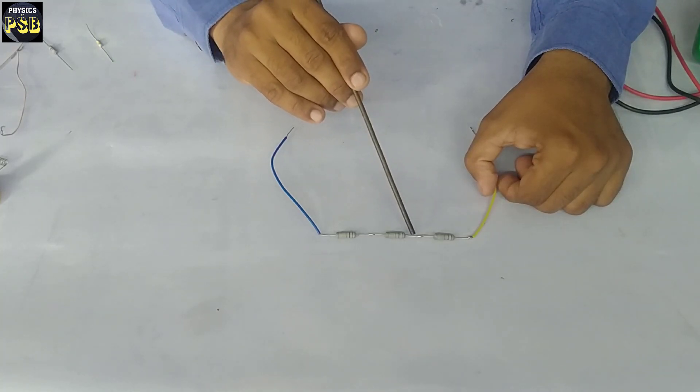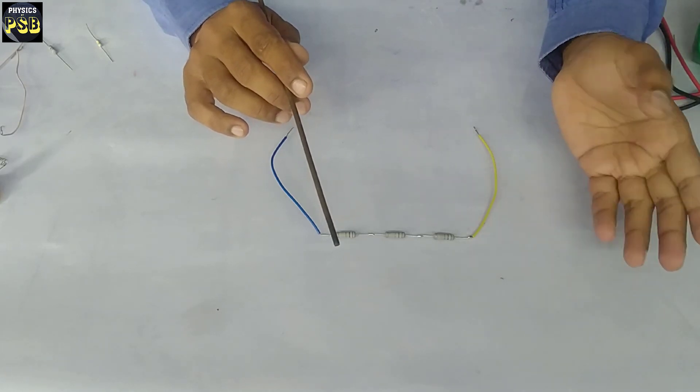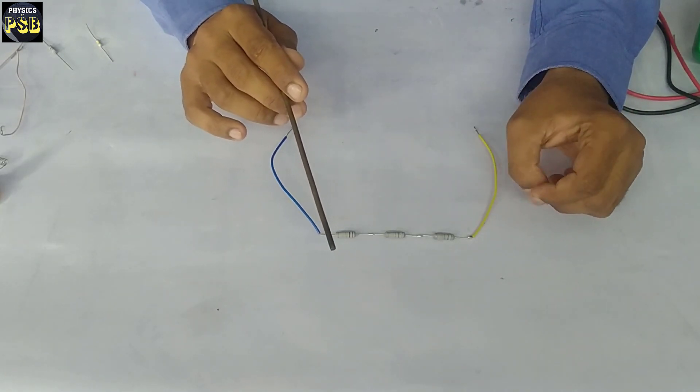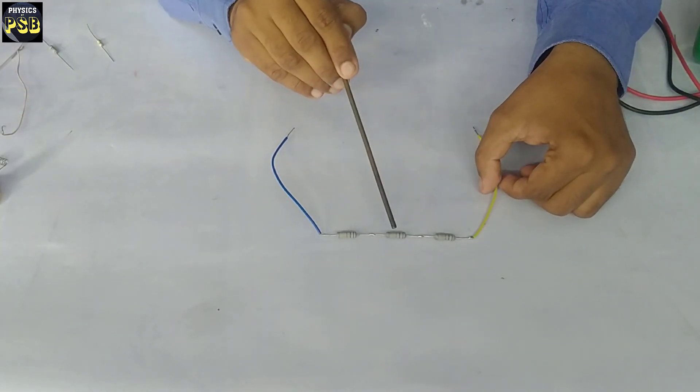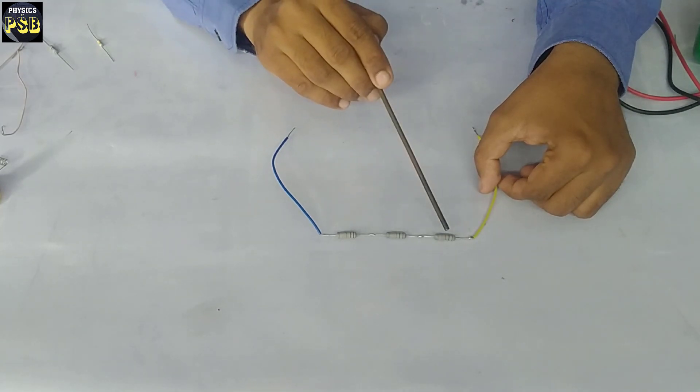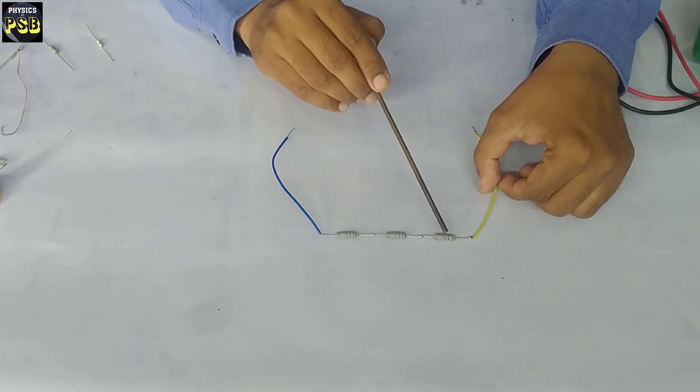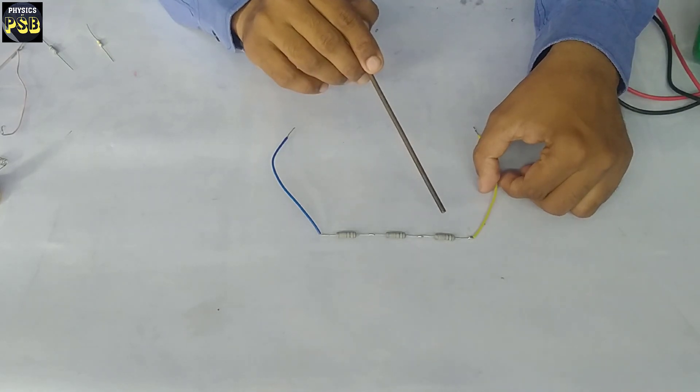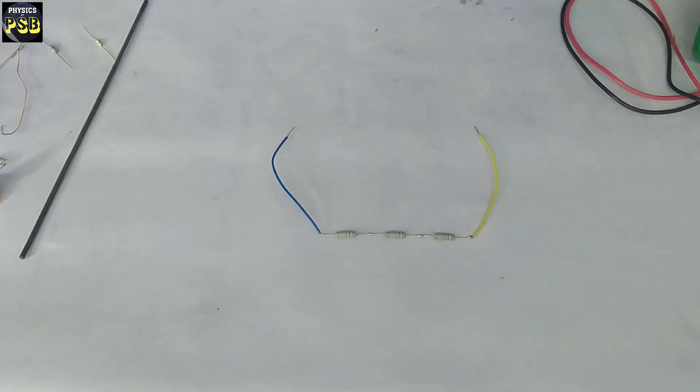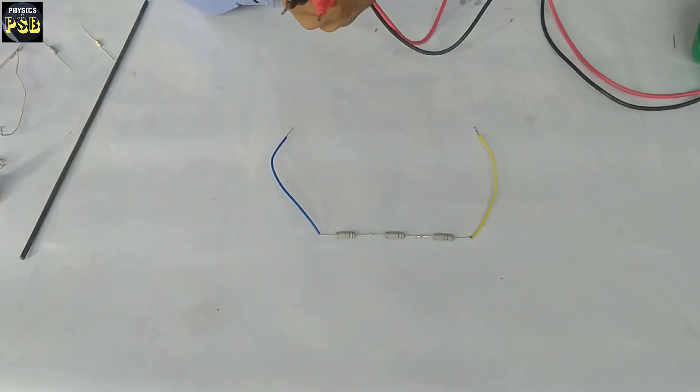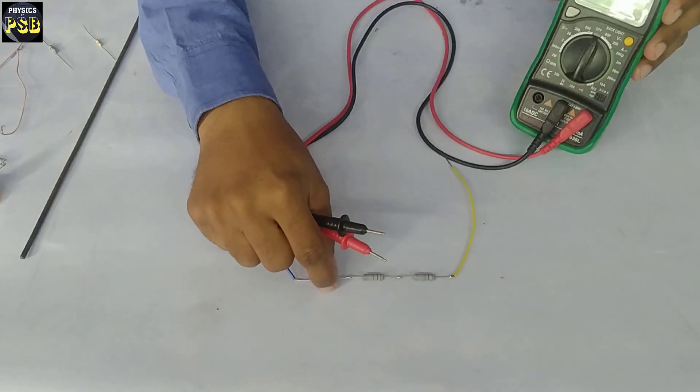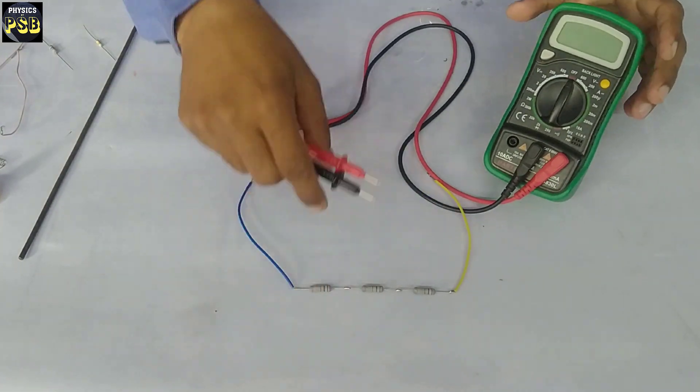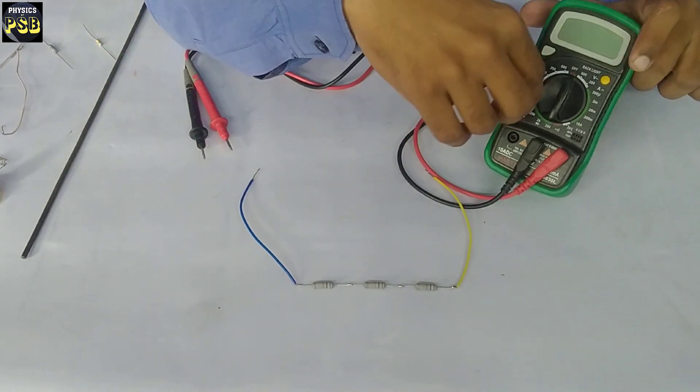In a series combination, we connect one end of the resistor to another end of the second resistor. This end-to-end connection is referred to as a series connection. Here I have taken three carbon resistors, each having a resistance of 1 kilo-ohm. One kilo means 1000 ohm. Now let me show you what happens when the resistors are connected in series with the help of a multimeter.